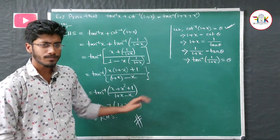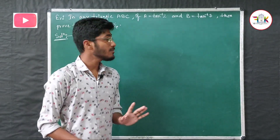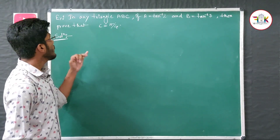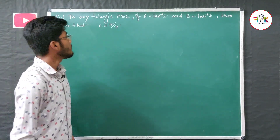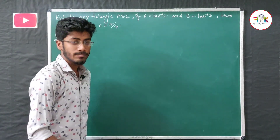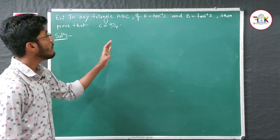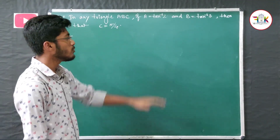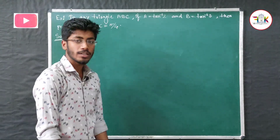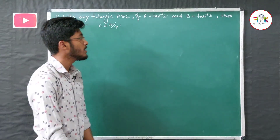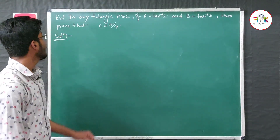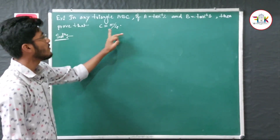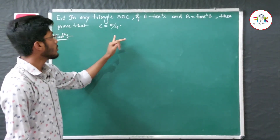Now come to the third question of this video. In any triangle ABC, if A = tan⁻¹2 and B = tan⁻¹3, then prove that C = π/4.